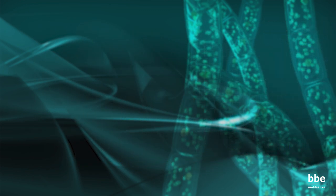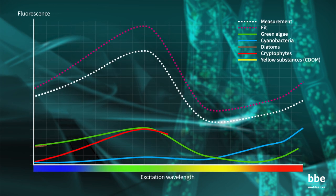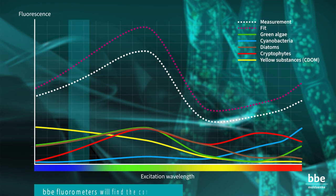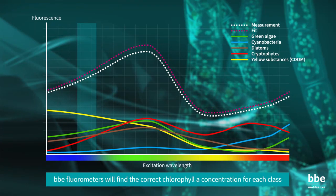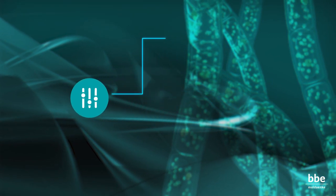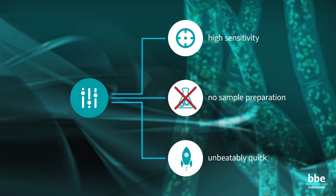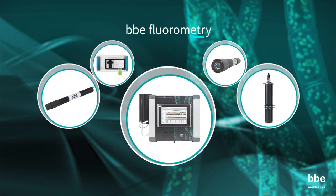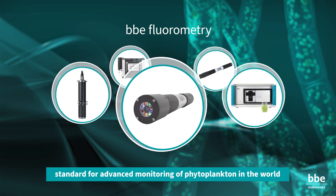A sample taken from a water body will probably contain a mixture of different algae classes. Using the norm spectra of all classes and the yellow substances, the BBE fluorometers will find the correct chlorophyll A concentration for each class. The method has high sensitivity, needs no sample preparation, and is unbeatably quick. BBE fluorometry is the standard for advanced monitoring of phytoplankton in the world.